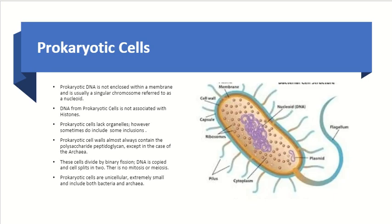Prokaryotic cells have DNA that is not enclosed in a specific organelle or nucleus — it is free-floating inside the cell. It forms a singular circular chromosome referred to as a nucleoid, and the DNA of prokaryotic cells is not associated with histones. They don't get compartmentalized and wrapped around. Prokaryotic cells lack specific organelles, though they sometimes have inclusions that store certain materials, and they have cell walls that always contain polysaccharide peptidoglycan, except in the case of archaea. These cells divide by binary fission — DNA is copied and the cell splits in two — with no mitosis or meiosis.